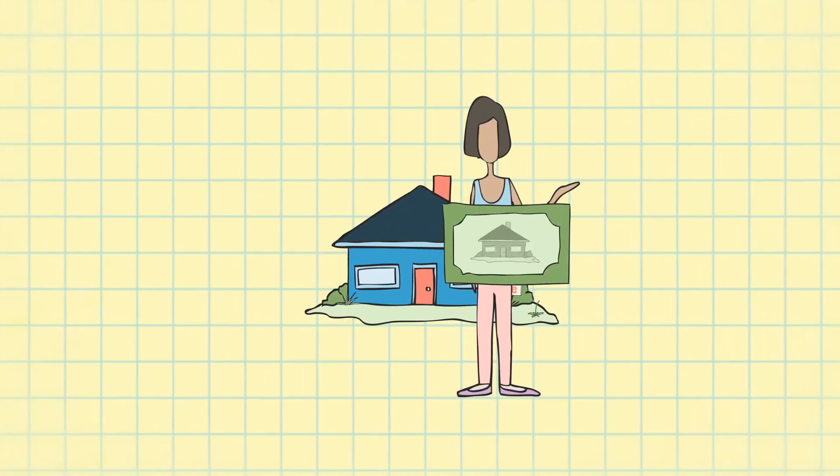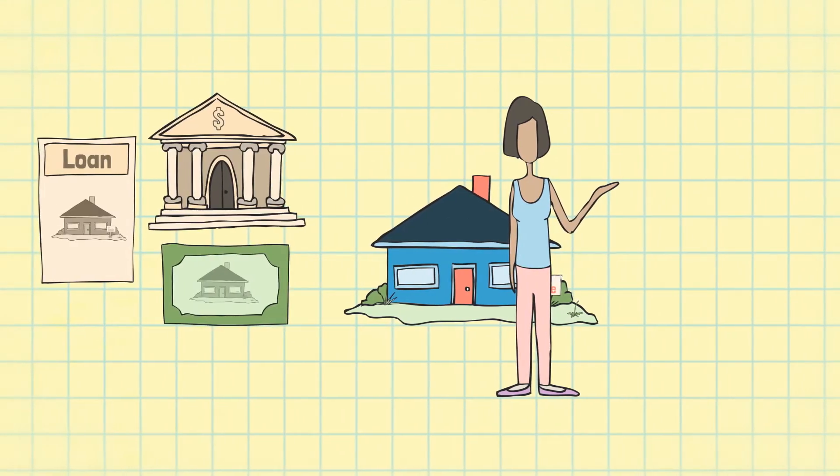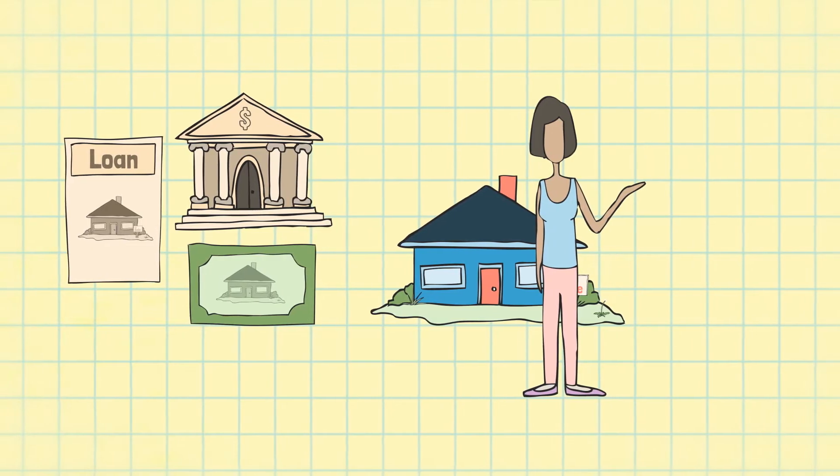But most people don't own their house outright. They have a loan. So if the seller borrowed money to buy the house in the first place, it's a bit trickier.